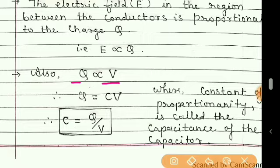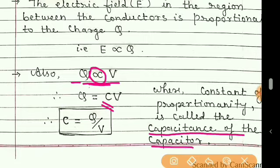Charge is directly proportional to V, or V is directly proportional to charge — the meaning is the same. If we remove the proportionality sign, there must be some constant related to the system of these two conductors, and that constant is the capacitance of the capacitor. Making C the subject, C = Q/V. This is one important formula of the capacitor.